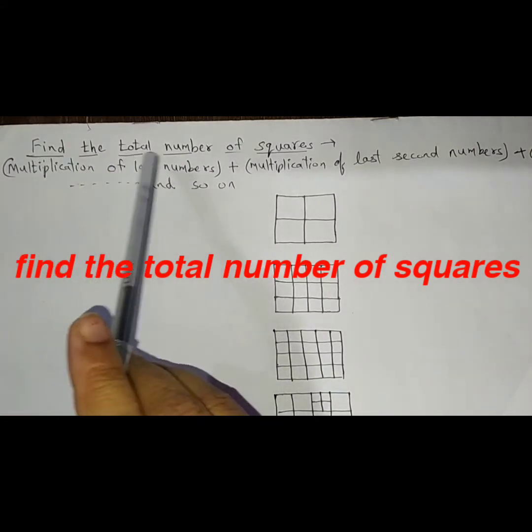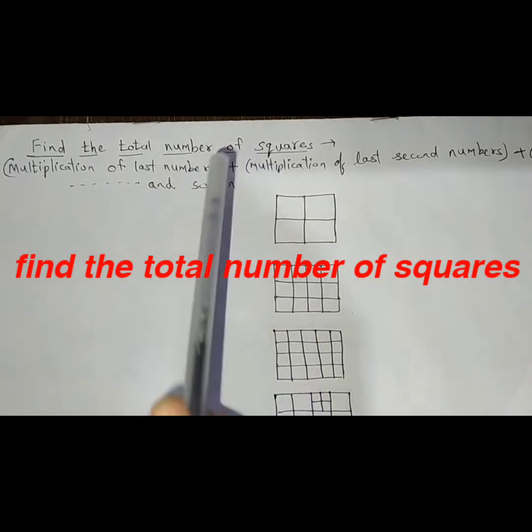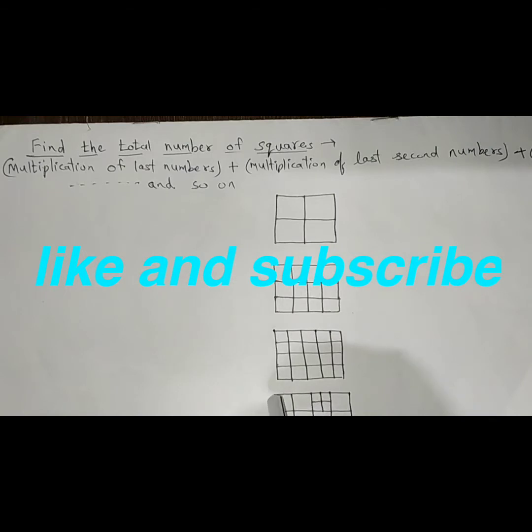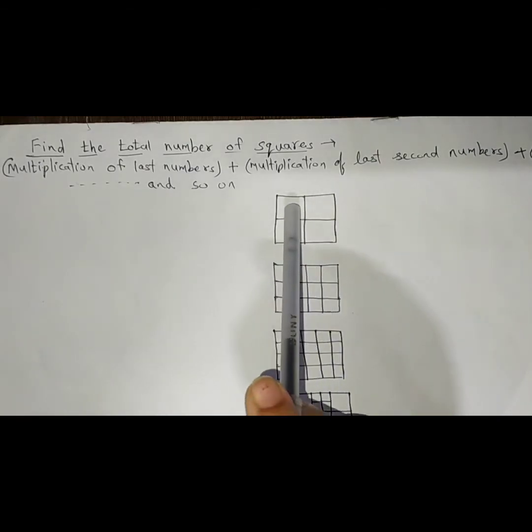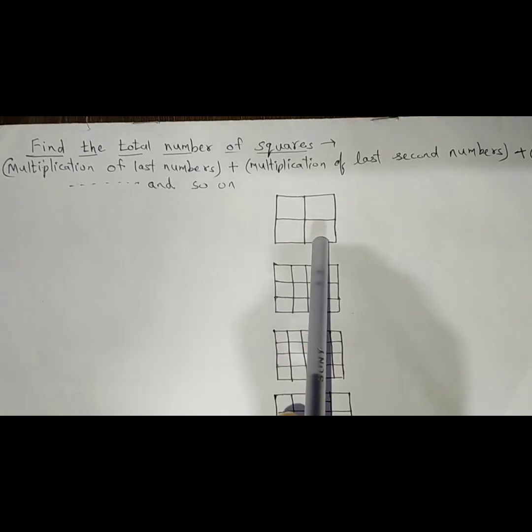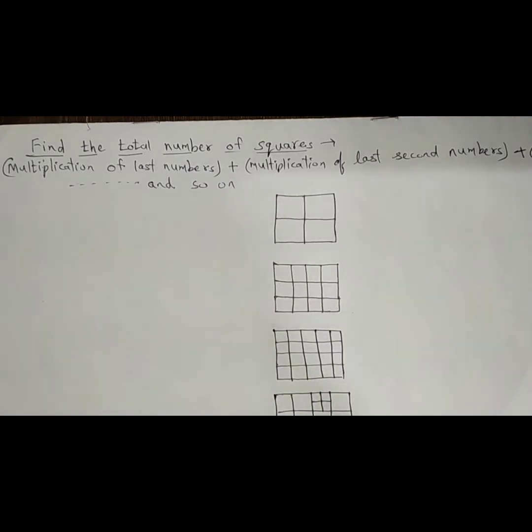Just we have to find the total number of squares. Many times such figures are given and you need to find out the total number of squares. If such is the figure it's very easy: 1, 2, 3, 4 and the whole, that is 5. So here you can find there are 5 squares. But if the figure is a little bit complicated, instead of counting each and every square, it needs too much time. Better you go by some trick.